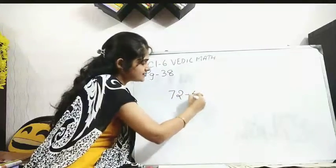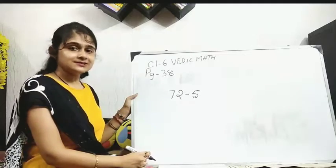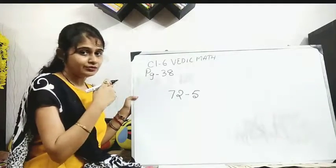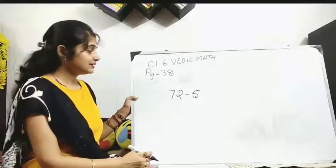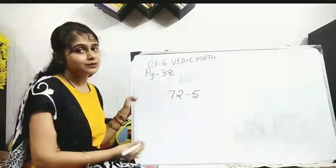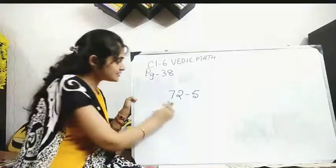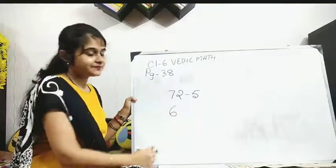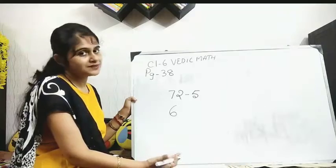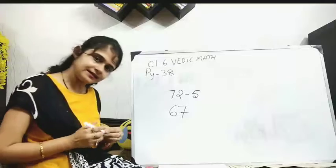72 minus 5. Okay, so again you consider your left side as 0, because this is single digit. Now 7 is greater, so match. And that side 5 is greater in the lower part, so mismatch. So when my second number is mismatch, 7 becomes 6. 5's complement is 5 again. 5 plus 2 or 2 plus 5, whatever you say, it's 7. So your answer is 67. Clear?